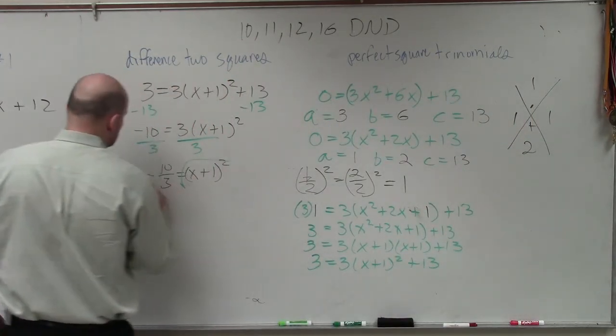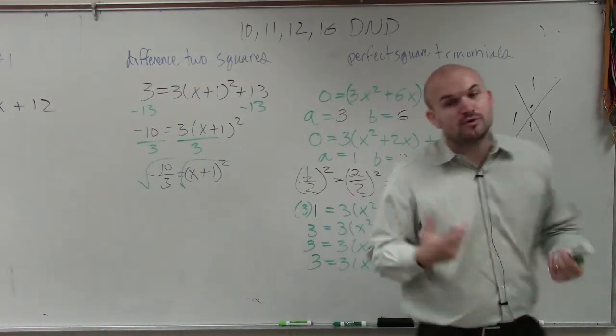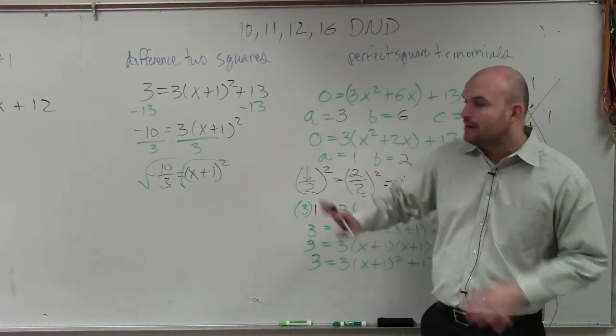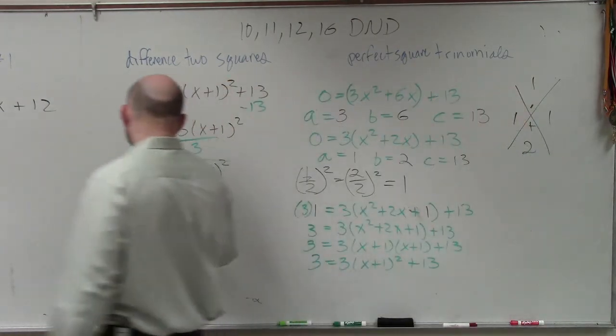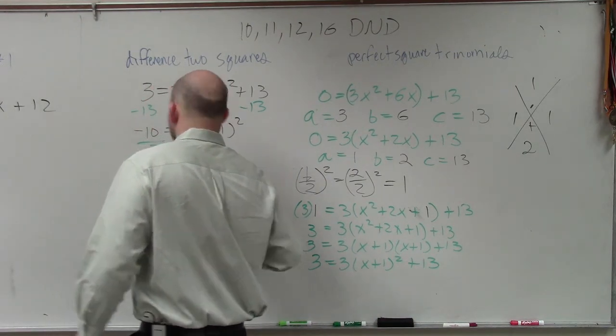And then the last thing we need to do is now introduce the square root. And remember what we talked about? Can you take the square root of negative numbers? No. No. So therefore, you're going to have your no real solutions. Now, we will talk about how to do this later. But for right now, I'd just like you guys to write in no real solutions.